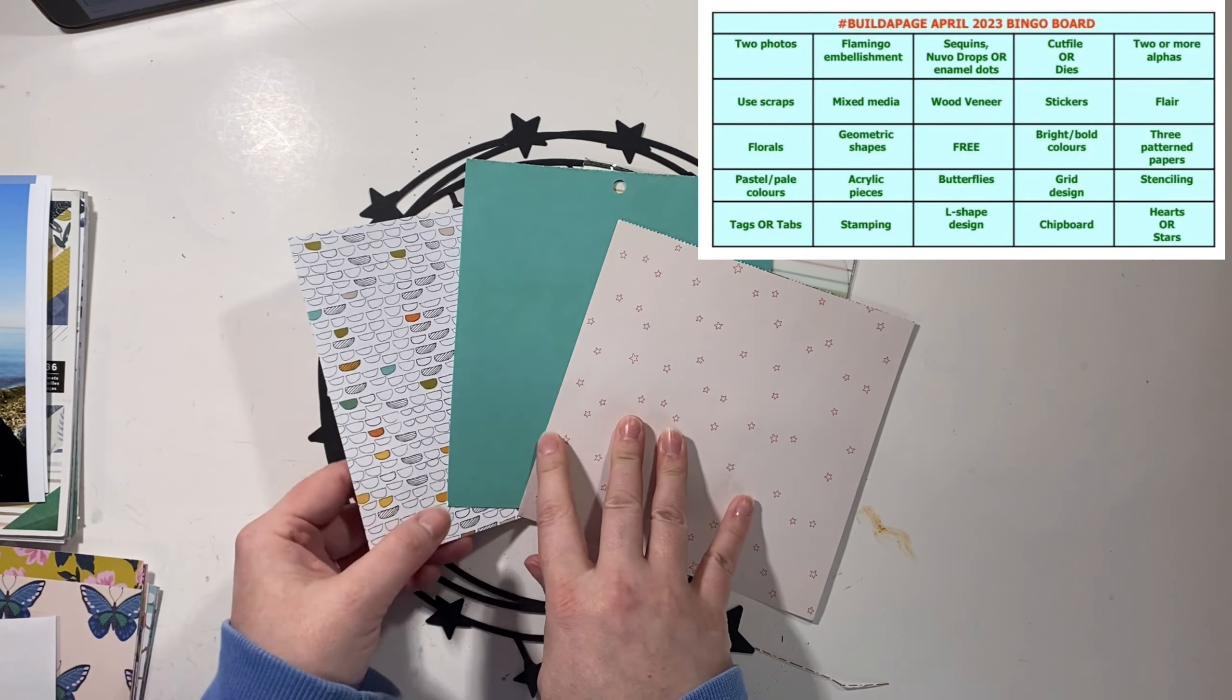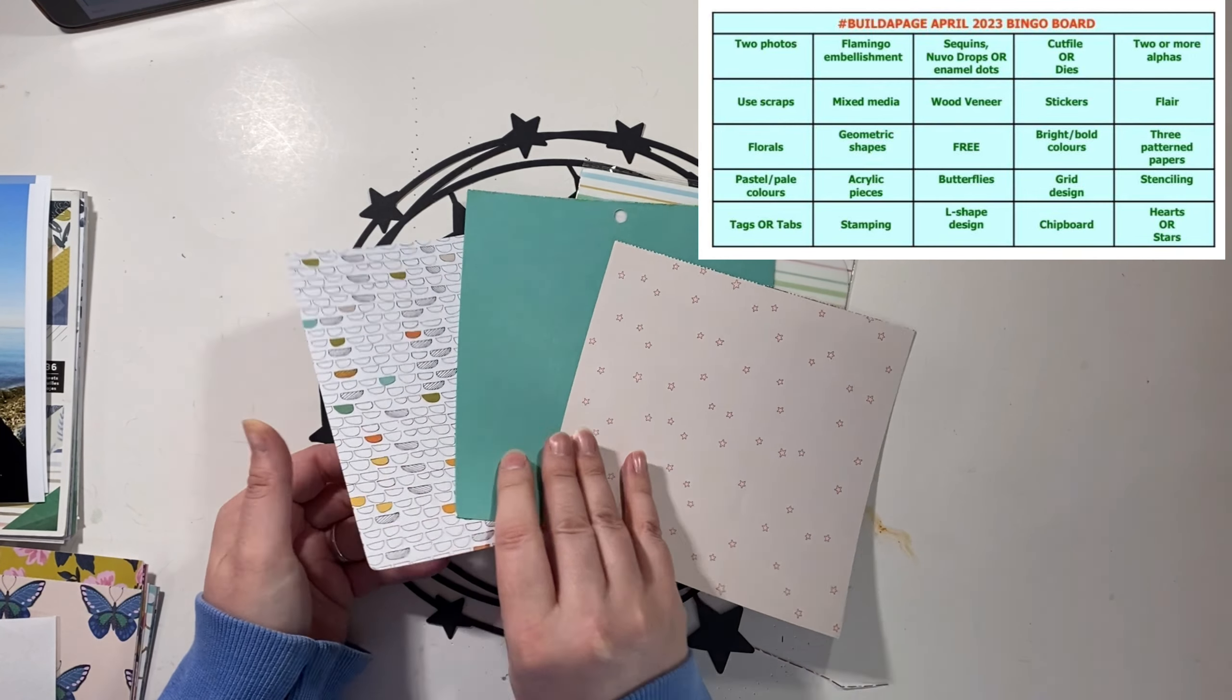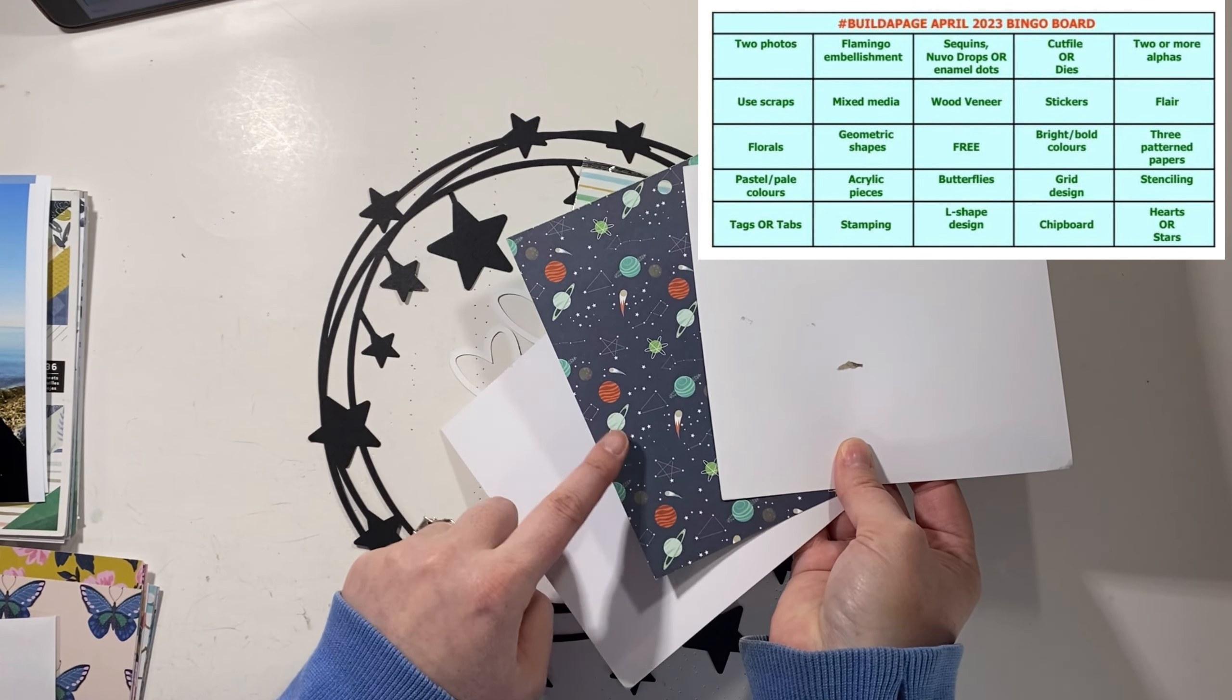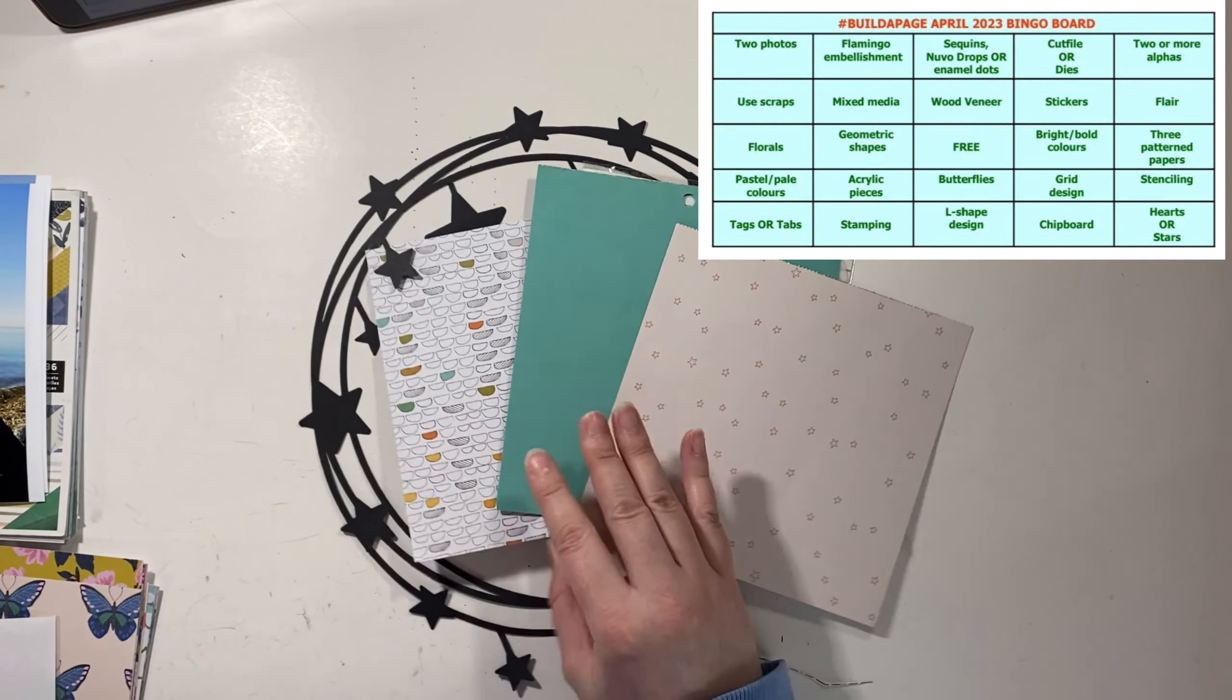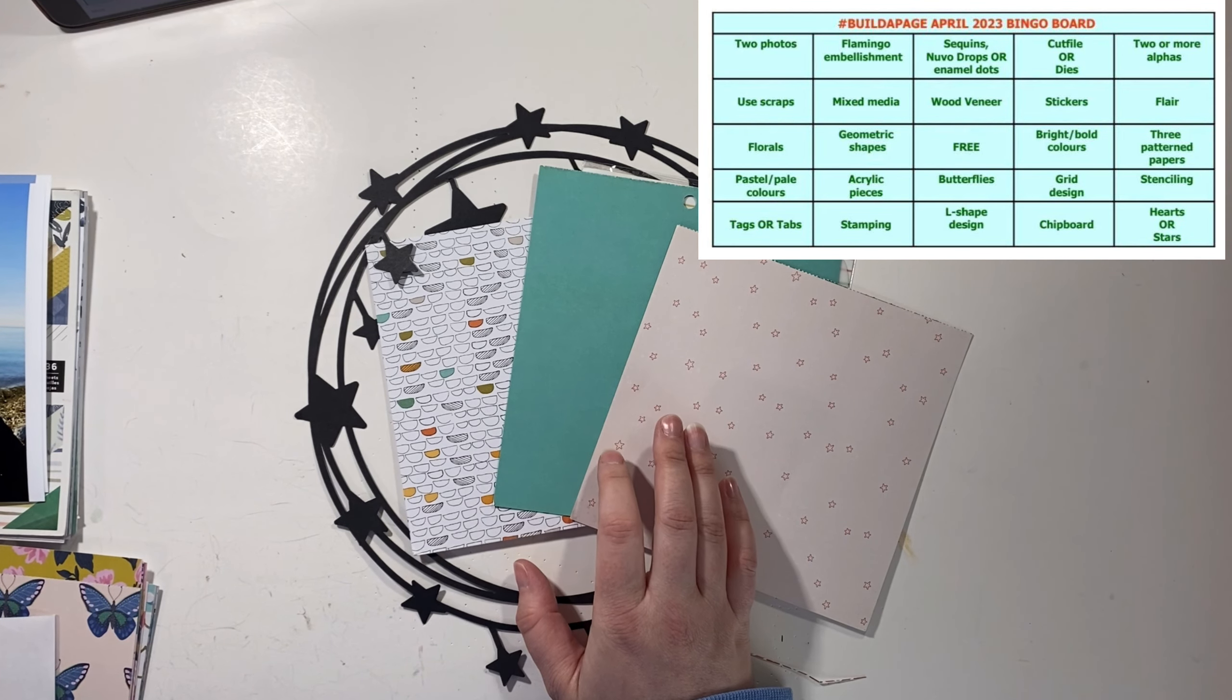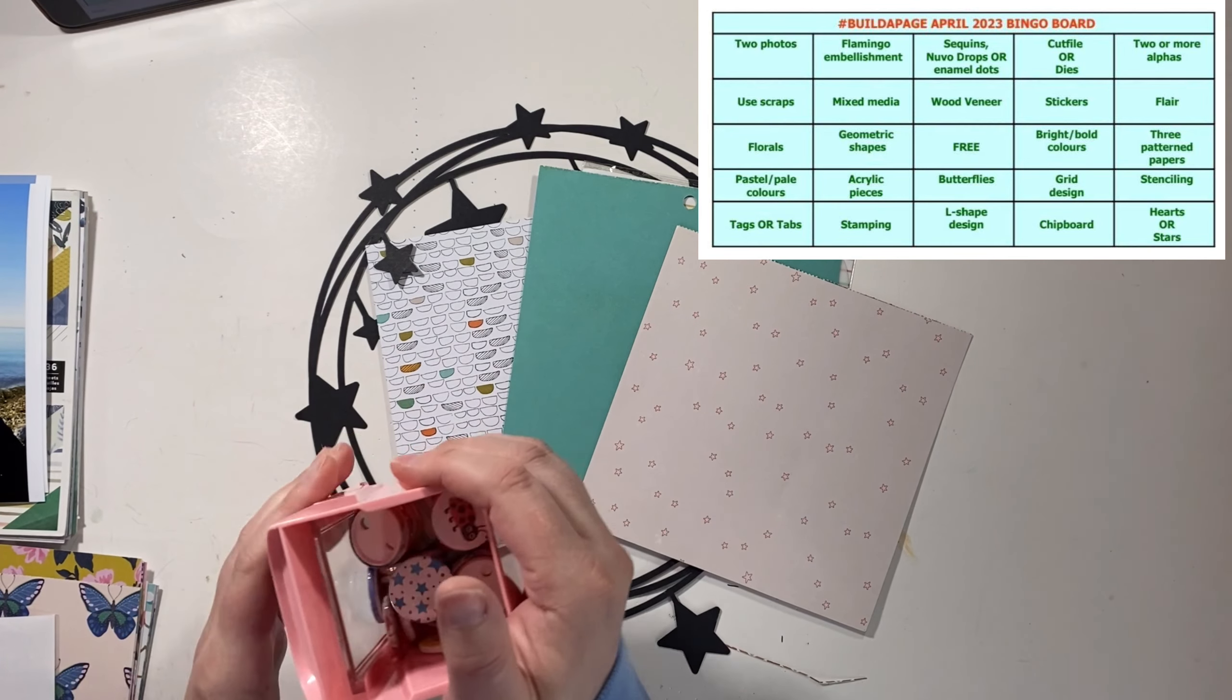I have my three pattern papers to play off of. I love these colors. I'm probably going to document one of my boys. There's also this kind of space theme one if I want to go that route. I don't know. And then I have this lovely little container.